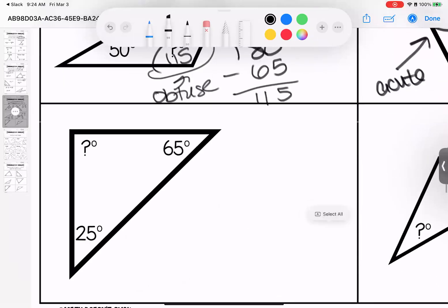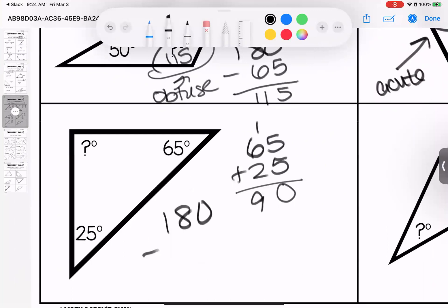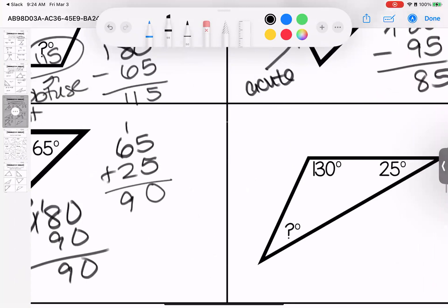Two more. I have 65 and 25, which gives me 90. I need 180 degrees. My angle is 90. That means that this angle is a right angle.